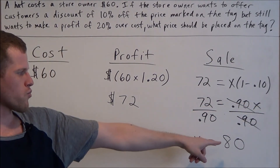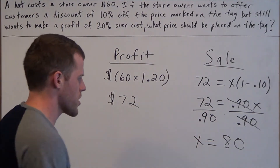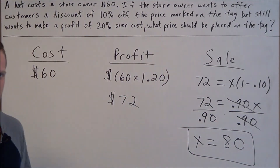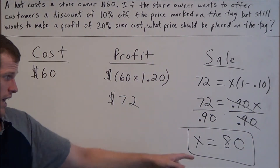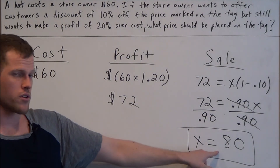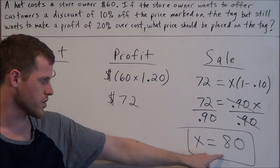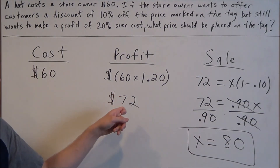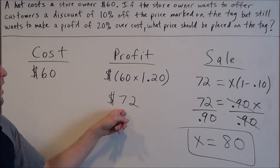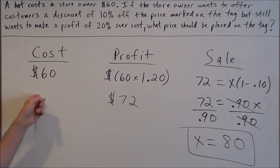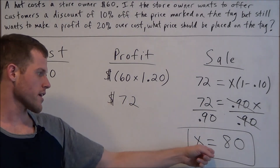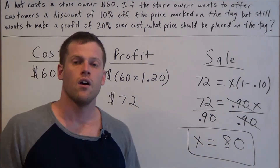Let's run through a quick check — I know the SAT is timed, but it's worth verifying. Take 10% off of $80 and that brings you back to $72. And $72 is 20% more than $60. So this answer definitely checks out.